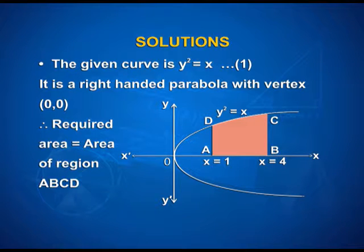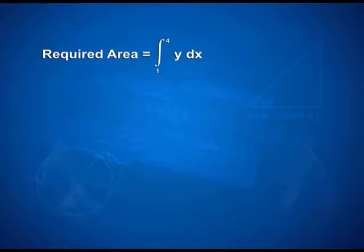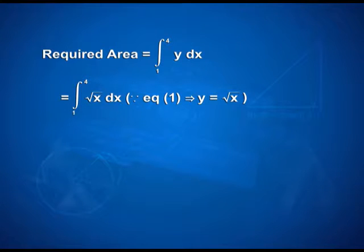Here you can see it is a right-handed parabola with the shaded region A, B, C, D. x is equal to 1 at A and x is equal to 4 at B. Therefore, required area is equal to integral from 1 to 4 of y dx, that is equal to integral from 1 to 4 of square root of x dx.